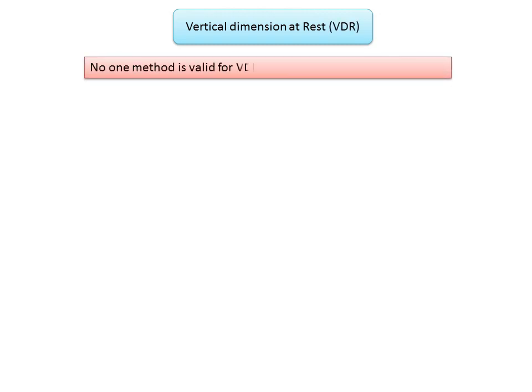At present, no single method is valid for determining the vertical dimension at rest for all patients. Incorrect measurement of the rest position can lead to faulty recording of the vertical dimension at occlusion and injury to the supporting structures and the temporomandibular joint. It is therefore fairly important to record the VDR accurately.